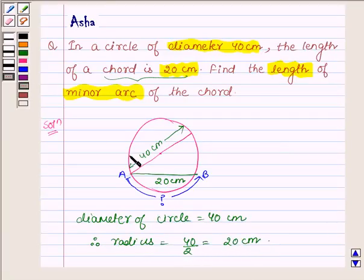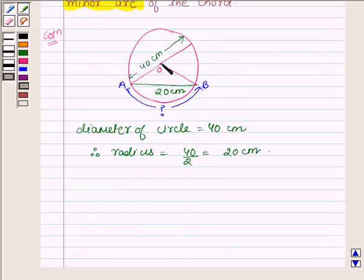And let O be the center. And then join OB. Now let us draw perpendicular from O on the chord AB. Then it will bisect the chord. And let this point be denoted by D.